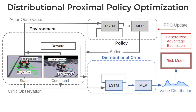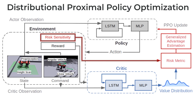We employ well-established risk metrics from economics to quantify risk in the distribution. These metrics consume the value distribution to produce a scalar value that balances potential return and risk. The risk-adjusted values are used for advantage computation when updating the policy. In particular, our experiments utilize the Wang metric, which has a parameter that modulates the risk preference ranging from risk-averse to risk-affine. Conditioning the learned policy on this parameter enables changing the risk preference during deployment.